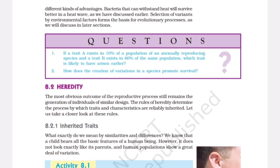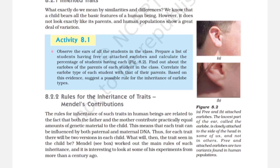Inherited traits. What exactly do we mean by similarities and differences? We know that a child bears all the basic features of a human being. However, it does not look exactly like its parents, and human populations show a great deal of variation. Activity 8.1: Observe the ears of all the students in the class. Prepare a list of students having free or attached earlobes and calculate the percentage of students having each — Figure 8.2. Find out about the earlobes of the parents of each student in the class. Correlate the earlobe type of each student with that of their parents. Based on this evidence, suggest a possible rule for the inheritance of earlobe types.